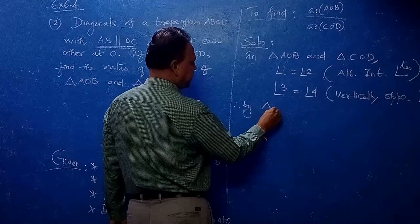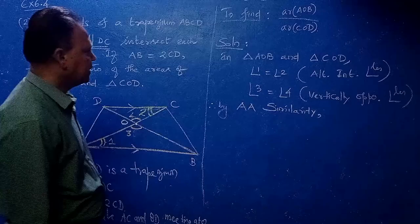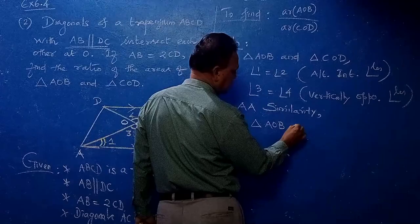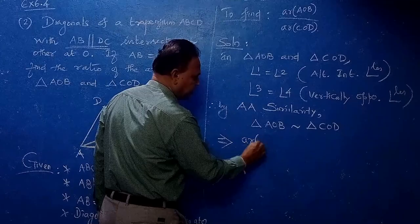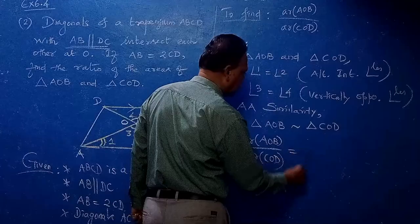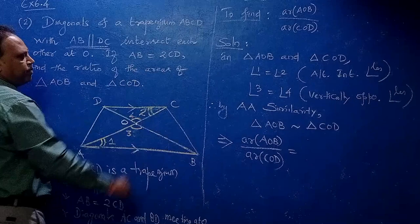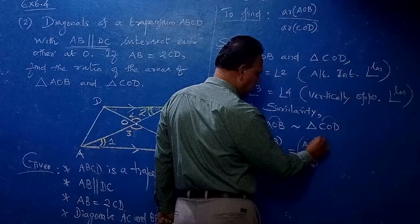Therefore by AA similarity, these two triangles are similar: Triangle AOB is similar to Triangle COD. When the two triangles are similar, this implies you can use the result: area of AOB by area of COD equals (AB by CD) whole squared — take the corresponding sides AB and CD. Write this by theorem.